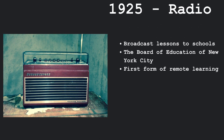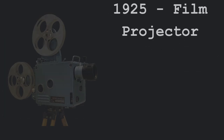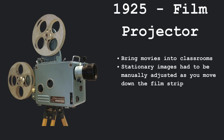In 1925, the radio was invented and organizations used this radio to broadcast lessons to schools. The Board of Education of New York City was the first to do this and it was also the first form of remote learning. Another invention that occurred in 1925 was the film projector. It was created to bring movies into classrooms and it showed stationary images that had to be manually adjusted as you move down the film strip, which was accompanied by an audio recording.